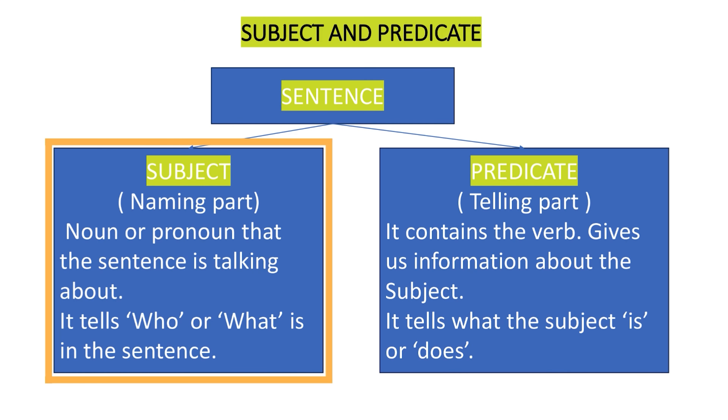A sentence is divided into two parts. The first part is called the subject and the second part is called the predicate. The subject is the naming part of a sentence — that means, what are we talking about or whom are we talking about in a sentence? Is it a person, place, animal, or thing? The noun or pronoun in a subject is called the naming part.